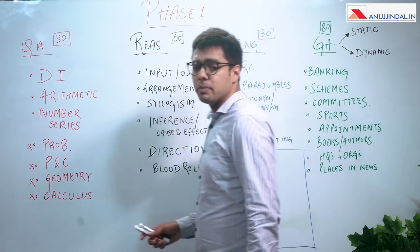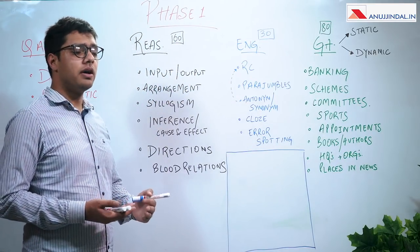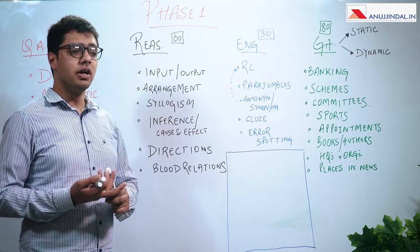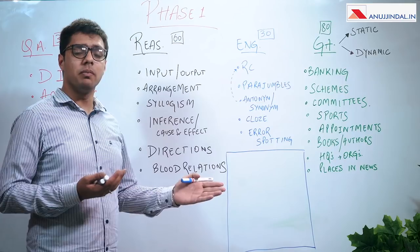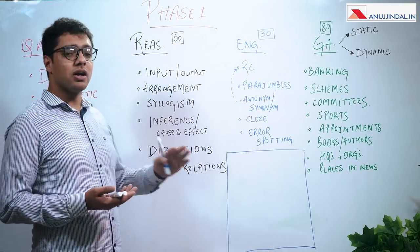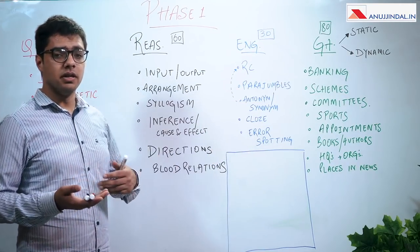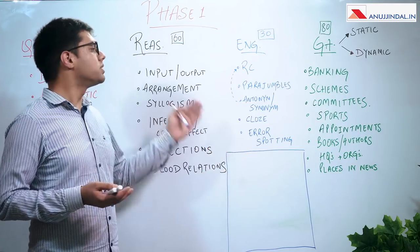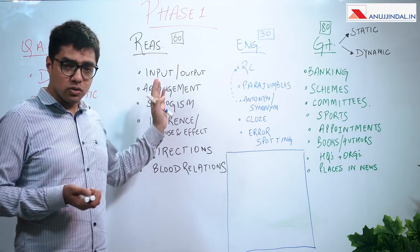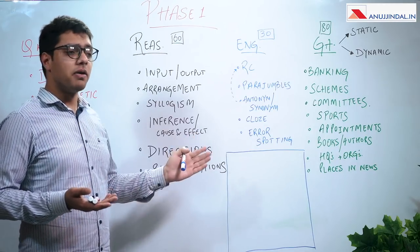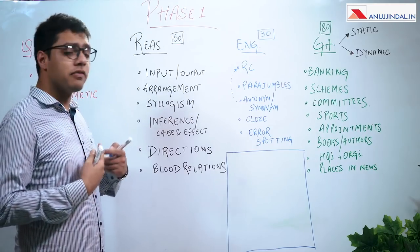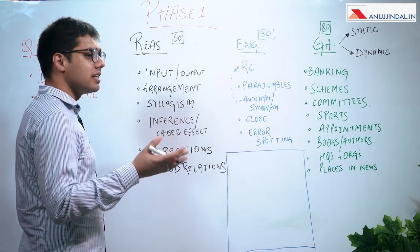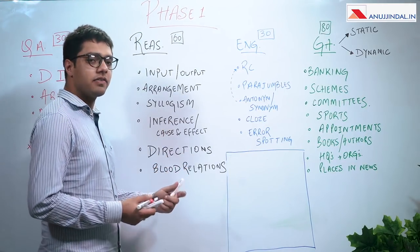Coming to the time management aspect — this is how I approach all objective-type papers, and it has really worked for me. I have a very time-bound approach to Phase 1 because it's all about how many questions you can do. The same set of questions, if given three or four hours, you may be able to solve all of them and get 180 out of 200. But what really matters in Phase 1 is your time management.